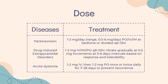Dosing. For Parkinsonism, including post-encephalitic Parkinsonism: 1-2 mg/day, range 0.5-6 mg/day, PO or IM at bedtime or divided Q6-12 hours. A lower dose of 0.5 mg at bedtime may be considered in sensitive patients. Titrate dose in 0.5 mg increments every 5-6 days, not to exceed 6 mg per day.